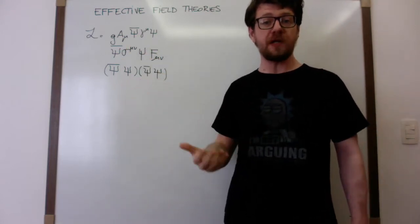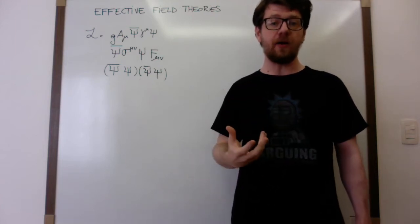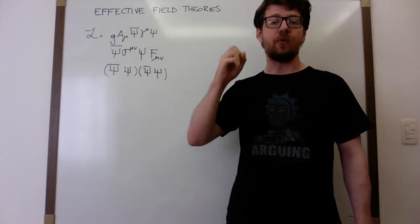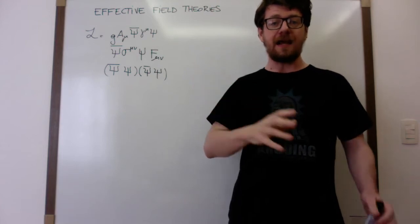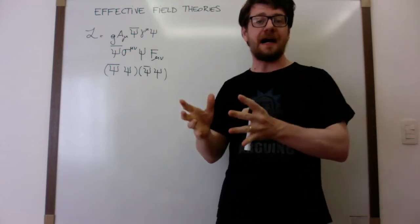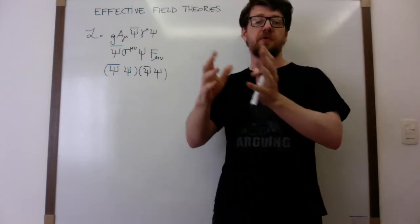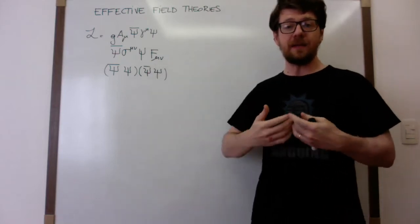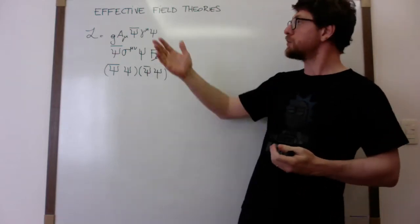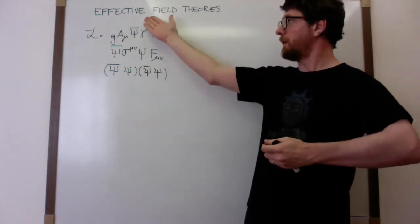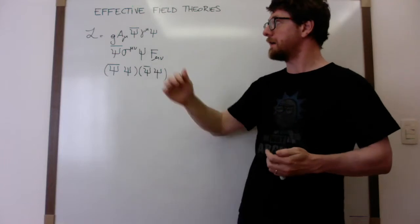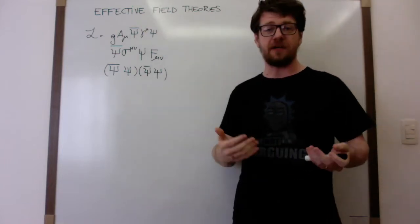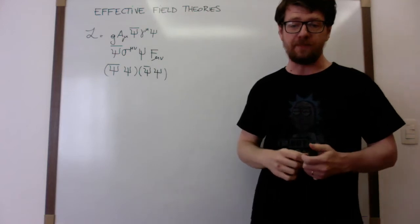Once we fix the particle content of our theory, we have infinitely many possible interactions we can write. So how should we order them? Is there a rationale that will allow us to select what are the most important and what are the second-order, third-order terms, and so on? The idea behind this classification comes from effective field theory.